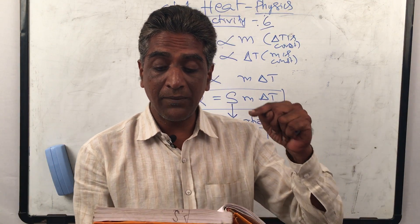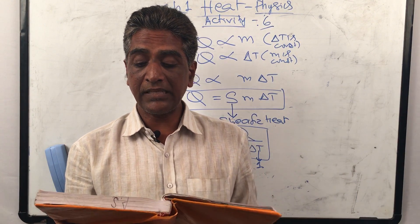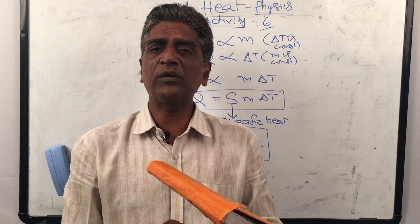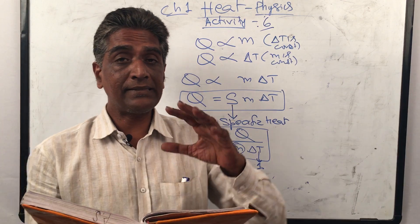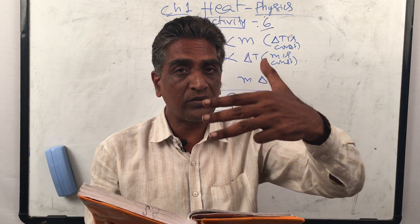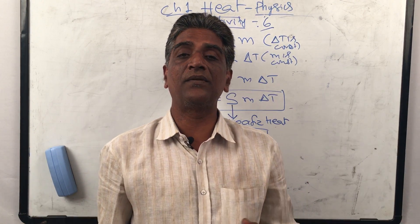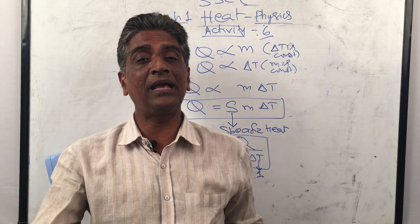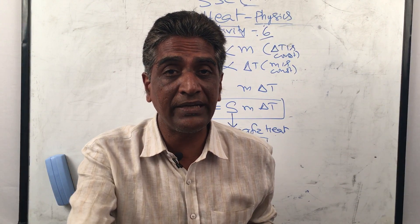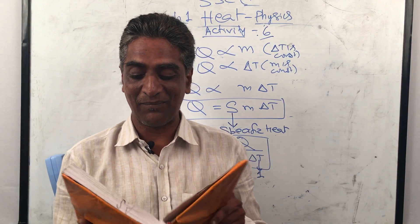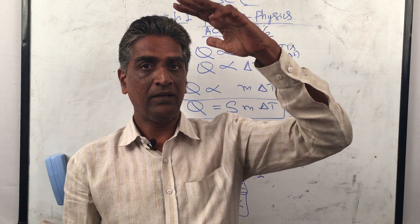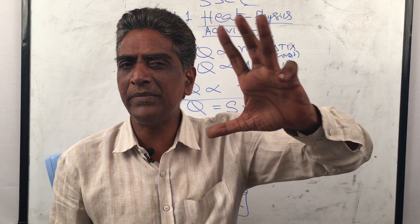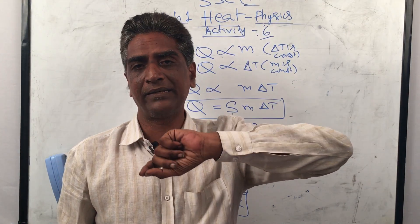The rise in temperature depends on the nature of the substance, and hence the specific heat of a substance depends on its nature. For the same amount of heat, different substances show different rises in temperature. If specific heat is high, more heat is required for one degree rise in temperature.